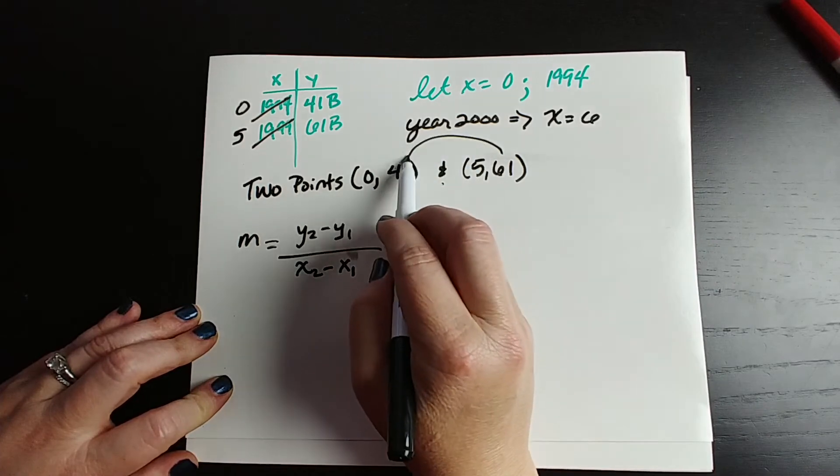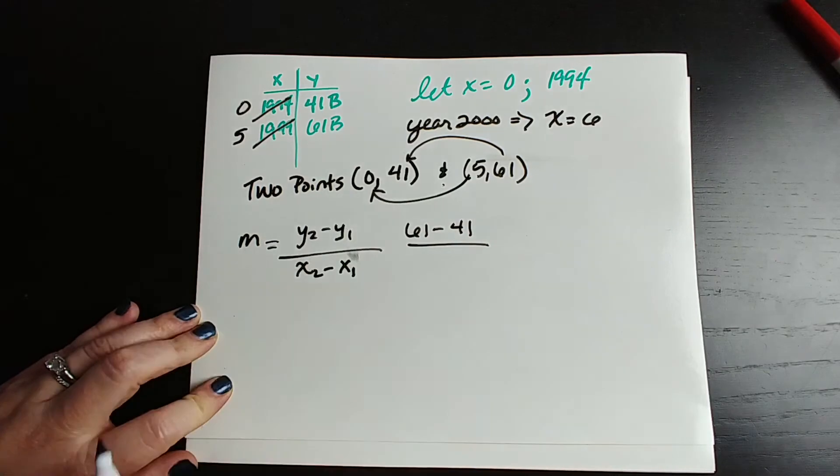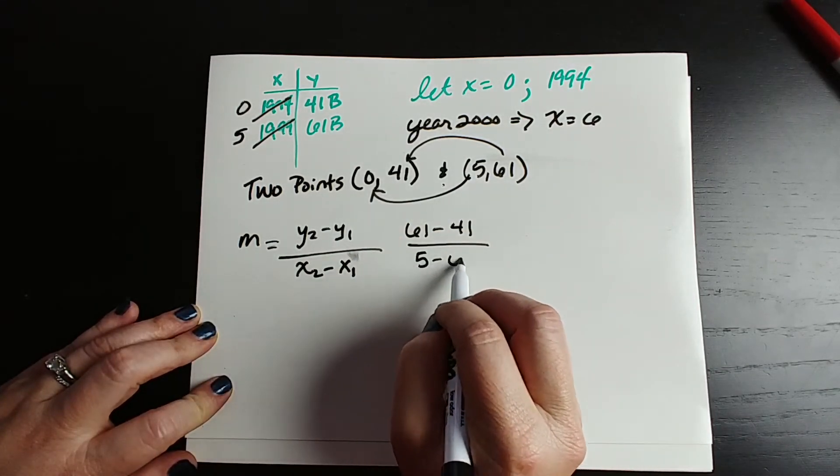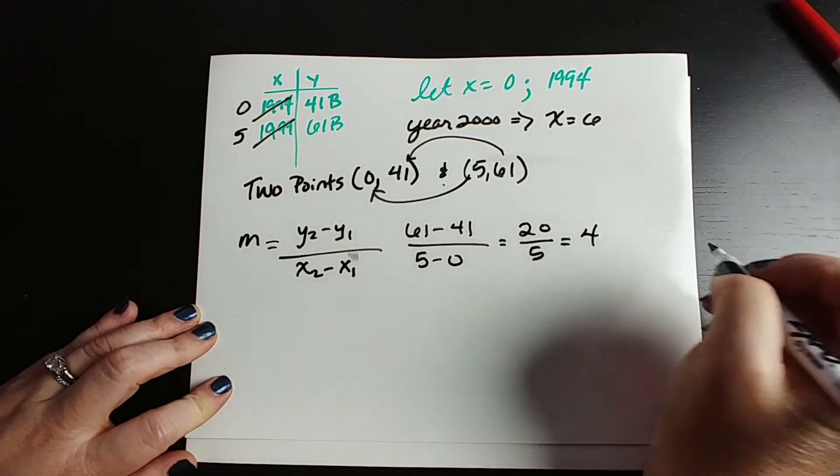Just pick it and go. So I always say if you're going to go 61 minus 41, then you have to go the same way for your x's. 61 minus 41 over 5 minus 0. You're going to get a 20 over 5, so you're going to get 4.